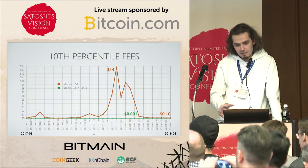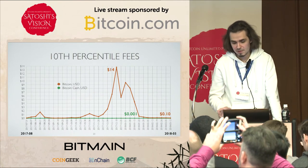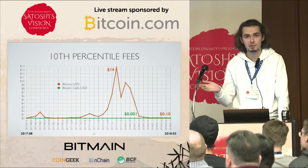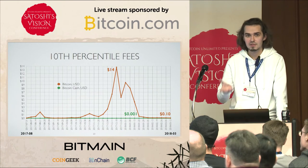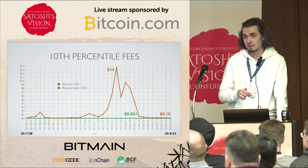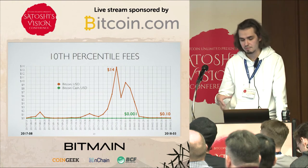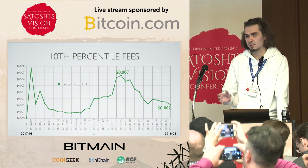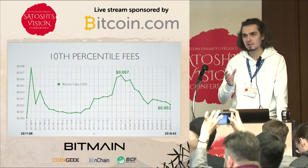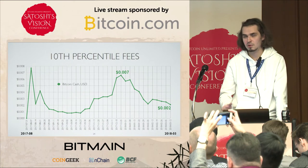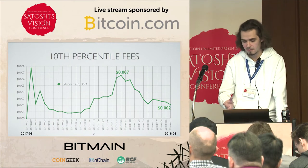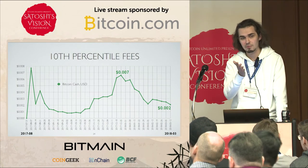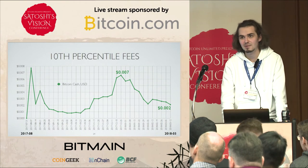If we dig even deeper to the 10th percentile fees — what's the 10th percentile? In Bitcoin it was $14, meaning 10% of transactions paid less than $14 and the other 90% paid more. For Bitcoin Cash that is just one tenth of a cent, meaning you can include a transaction in the Bitcoin Cash blockchain for as low as one tenth of a cent. You can try this right now.